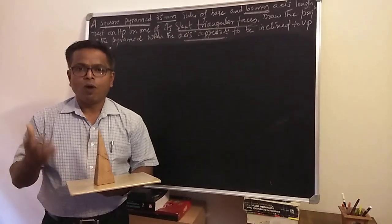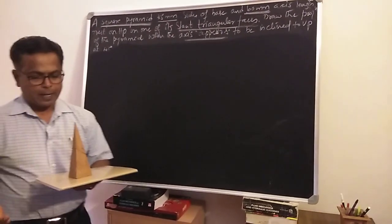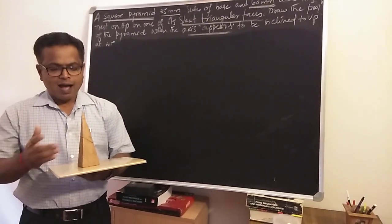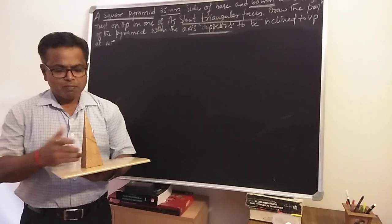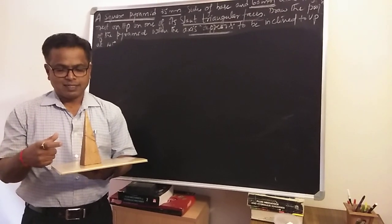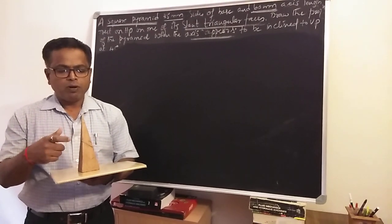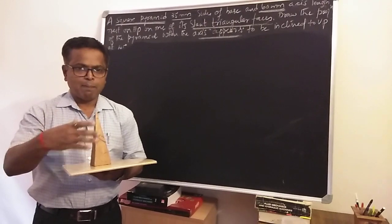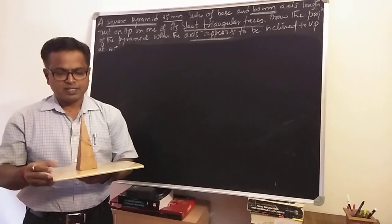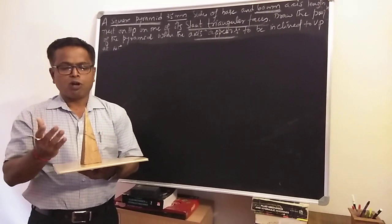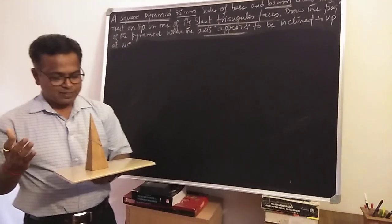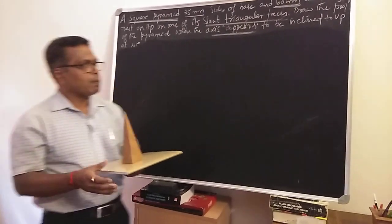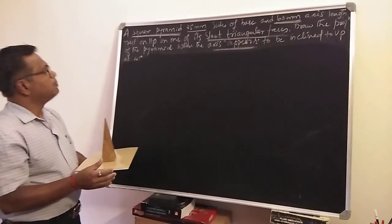Before coming to the problem, let me explain what is meant by a solid. A solid is a three-dimensional object having length, breadth, and thickness, and it is bounded by slant faces, parallelogram faces, or sometimes a combination of plane and curved surfaces. Here, we take up a problem involving a pyramid.